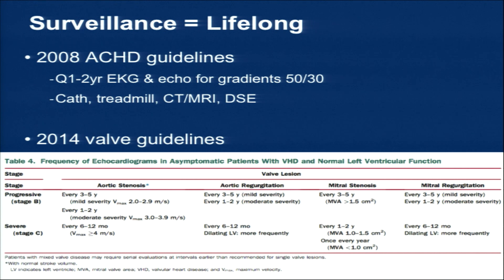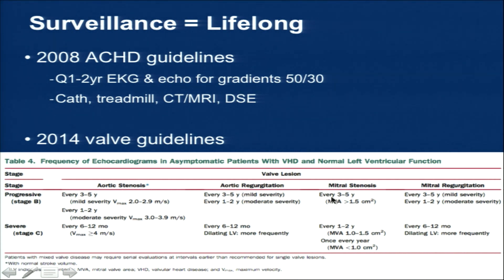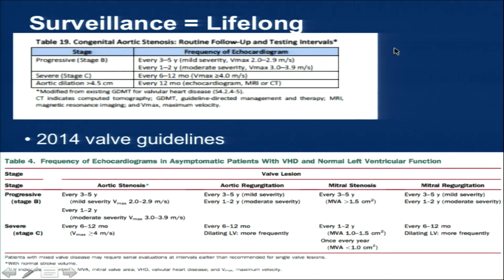For follow-up, the 2008 ACHD guidelines gave parameters for how often to use EKG and echocardiogram based on gradient severity, along with other modalities such as catheterization, treadmills, CT/MRI, and stress echo. The 2014 valve guidelines incorporated into the 2018 ACHD guidelines recommend: milder disease every three to five years, moderate severity every one to two years, severe disease every six to twelve months, and significant dilation at least annually.